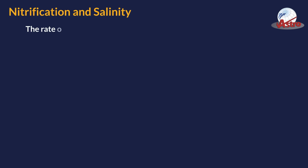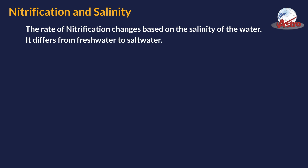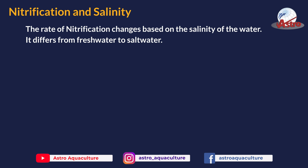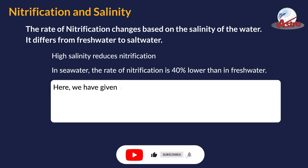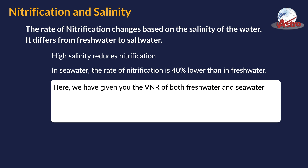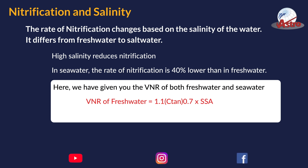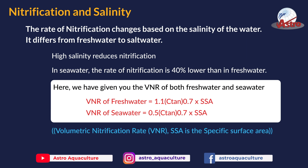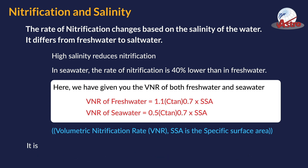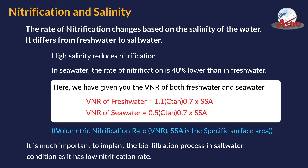Nitrification and Salinity. The rate of nitrification changes based on the salinity of the water, differing from fresh water to salt water. Note: high salinity reduces nitrification. In seawater, the rate of nitrification is 40% lower than in fresh water. The volumetric nitrification rate (VNR) for fresh water equals 1.1 × TAN^0.7 × specific surface area (SSA). It is especially important to account for biofiltration in saltwater conditions, as it has a lower nitrification rate.